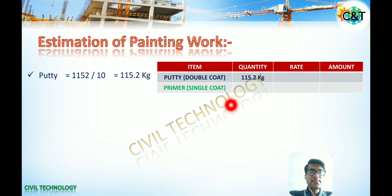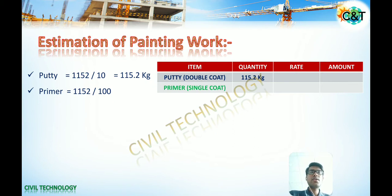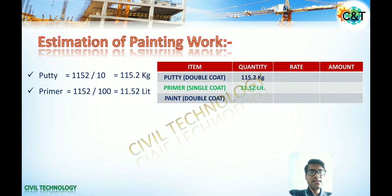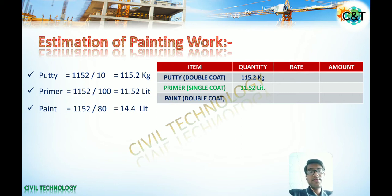Next is primer, which we apply in one coat. Primer covers 100 to 150 square feet per litre, but for the conservative side we take 100 square feet coverage. Total painting area divided by coverage area gives the primer quantity — that is 11.52 litres. Put that in the table. Next is paint, which we apply in double coat. It covers 80 to 100 square feet per litre. Likewise we calculate all major material quantities for the painting work.